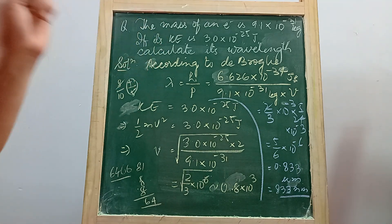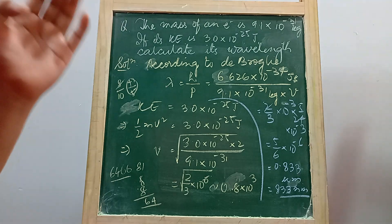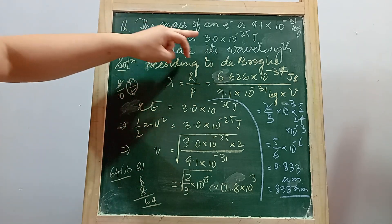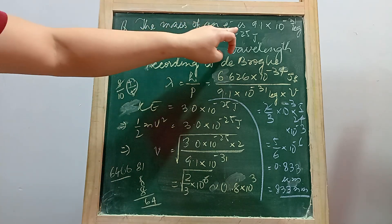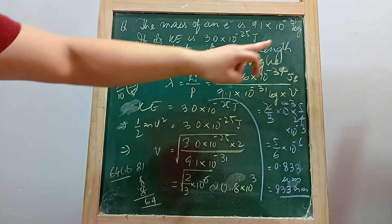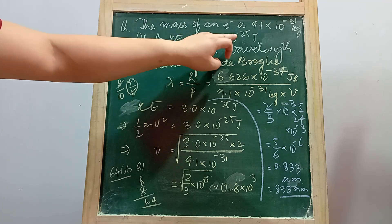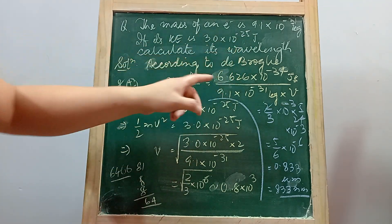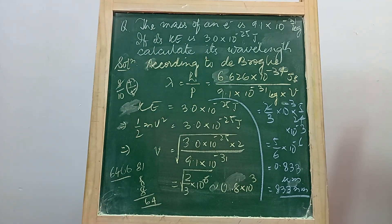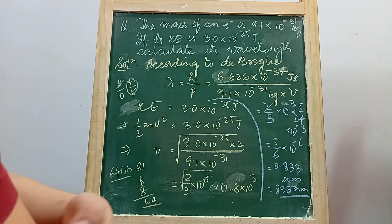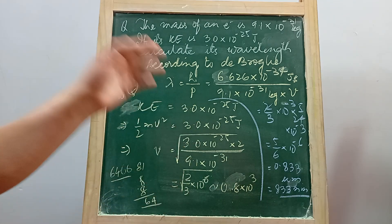Let's try to understand this problem related to the dual nature of matter. The mass of an electron is 9.1 × 10⁻³¹ kg. If its kinetic energy is 3.0 × 10⁻²⁵ joules — a very small amount — calculate its wavelength. So you are given the mass of the electron and the kinetic energy, and you are required to calculate the wavelength.